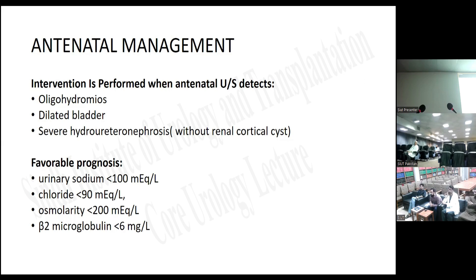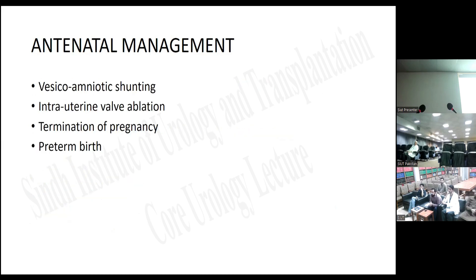Favorable prognosis depends on amniotic electrolytes: urinary sodium less than 100 mEq/L, chloride less than 90 mEq/L, osmolarity less than 200 mOsm/L, and beta-2 microglobulin less than 6 mg/L. Antenatal management options include vesicoamniotic shunting and in-utero valve ablation — both performed in the developed world — as well as termination of pregnancy and preterm birth.